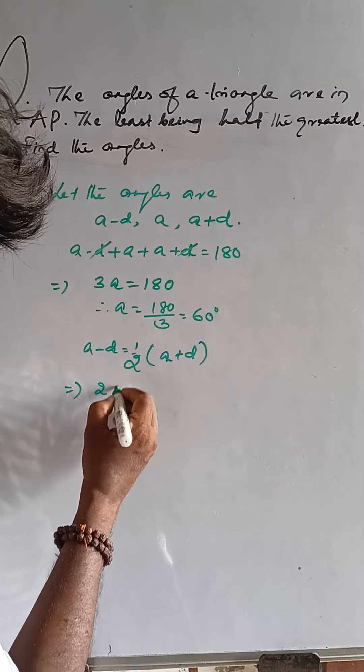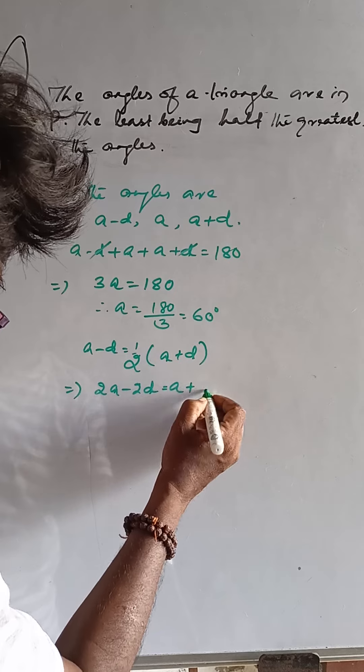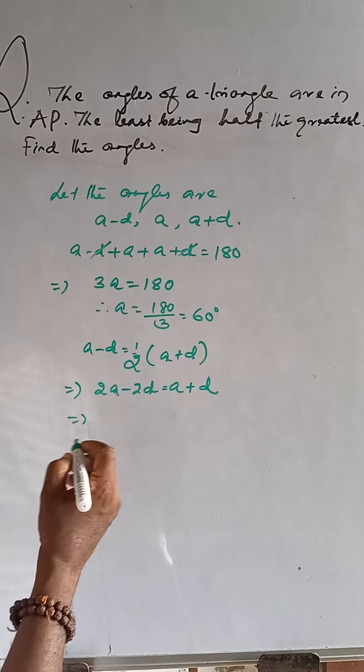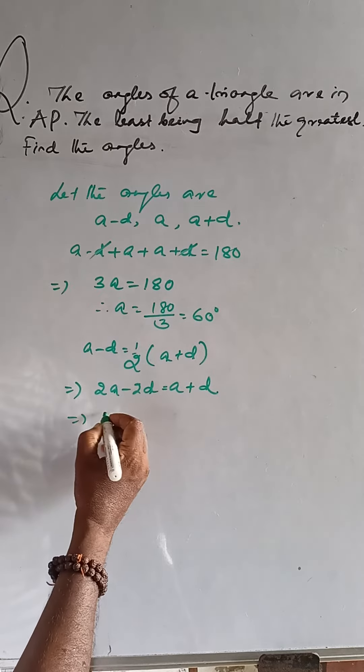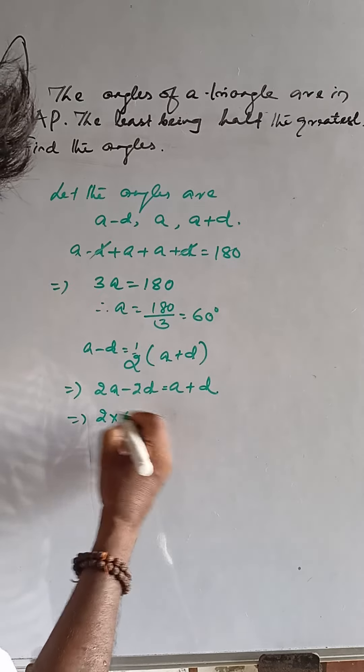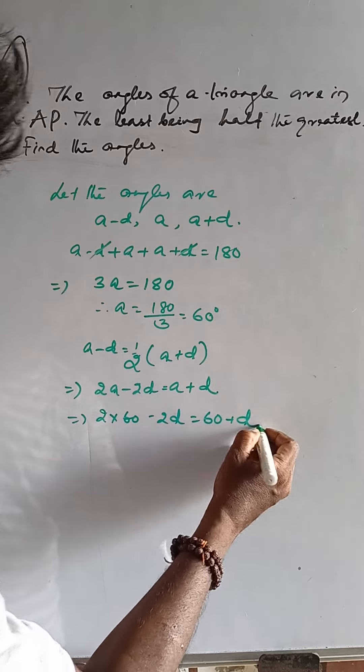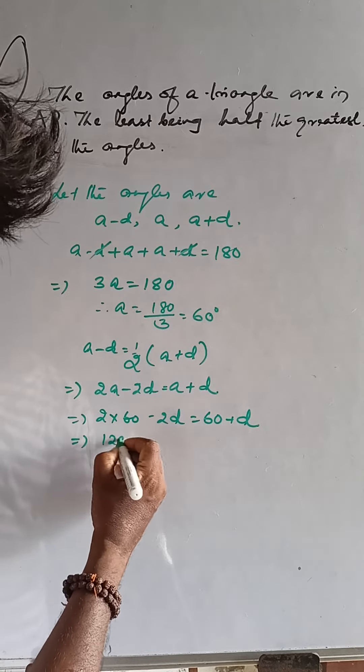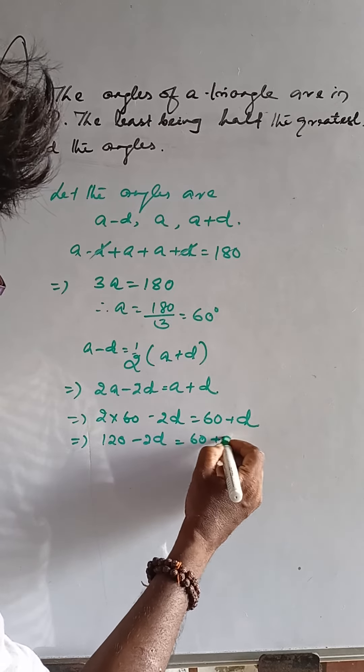So now this is 2A minus 2D is equal to A plus D. Then, substituting 60 degrees for A, that is 2 into 60 minus 2D is equal to 60 plus D. Then, 120 minus 2D is equal to 60 plus D.